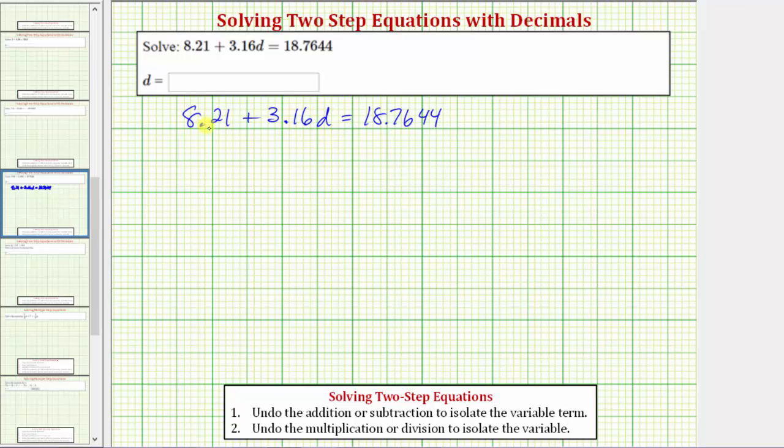But we can undo or eliminate 8.21 by subtracting 8.21 on both sides of the equation. So for the first step, we'll subtract 8.21 on both sides of the equation.